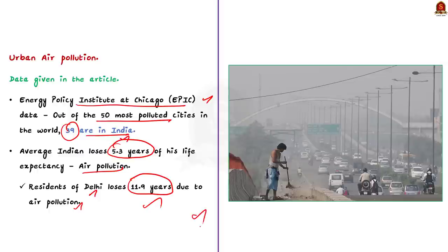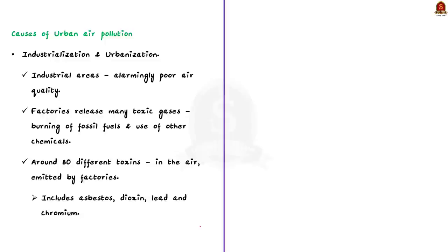In our discussion today, let us see the causes of urban air pollution and the steps that can be taken to address it. The first major cause is industrialization and urbanization. The areas around industries show alarmingly poor air quality. Factories release many toxic gases due to burning of fossil fuels and use of other chemicals. It is estimated that around 80 different toxins — including asbestos, dioxins, lead and chromium — can be found in the air emitted by factories.